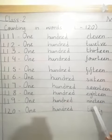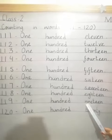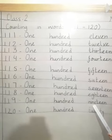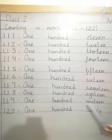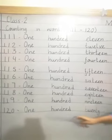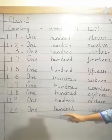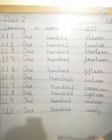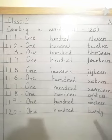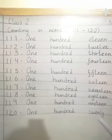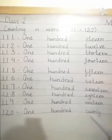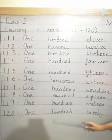What is the spelling of 19? N-I-N-E-T-E-E-N. 19. Then 120. What is the spelling of 20? T-W-E-N-T-Y. 20. 120.